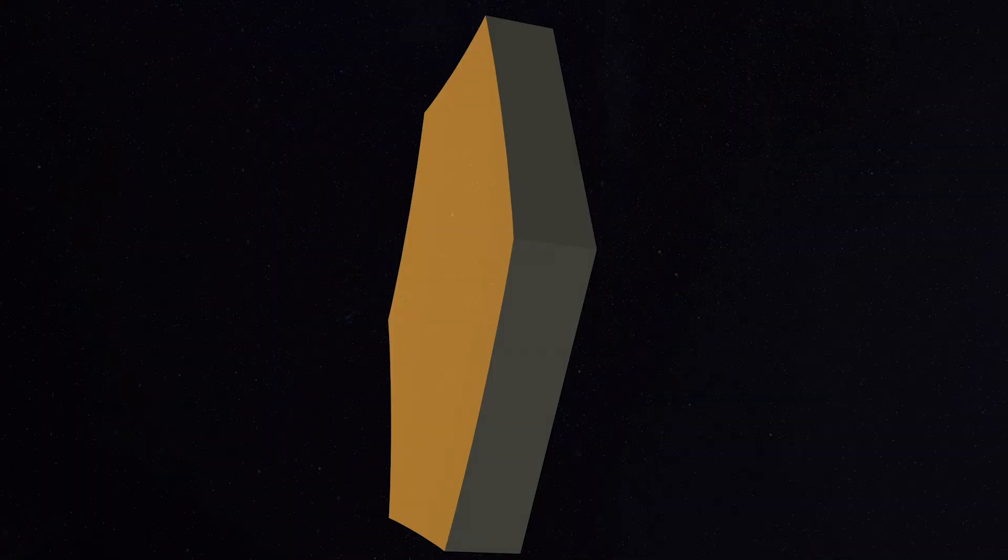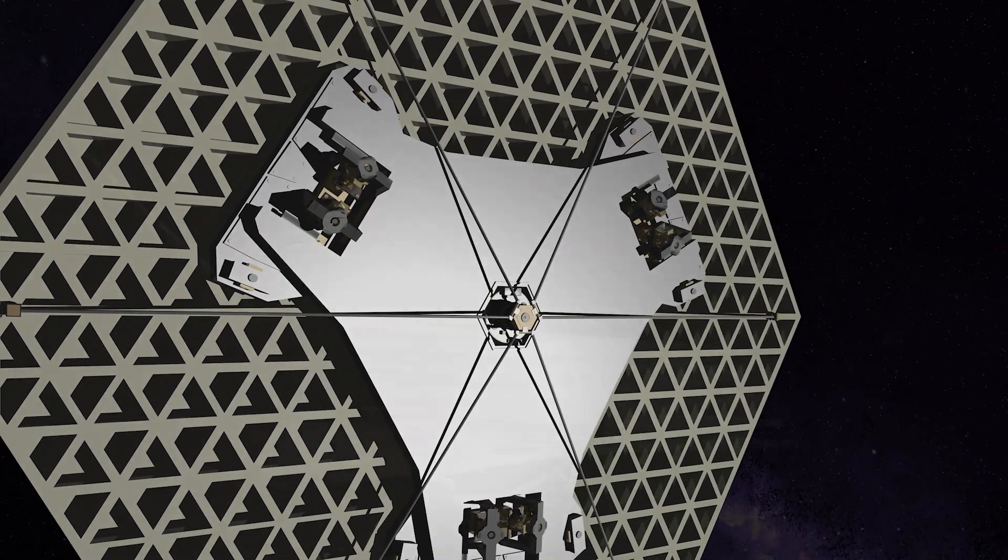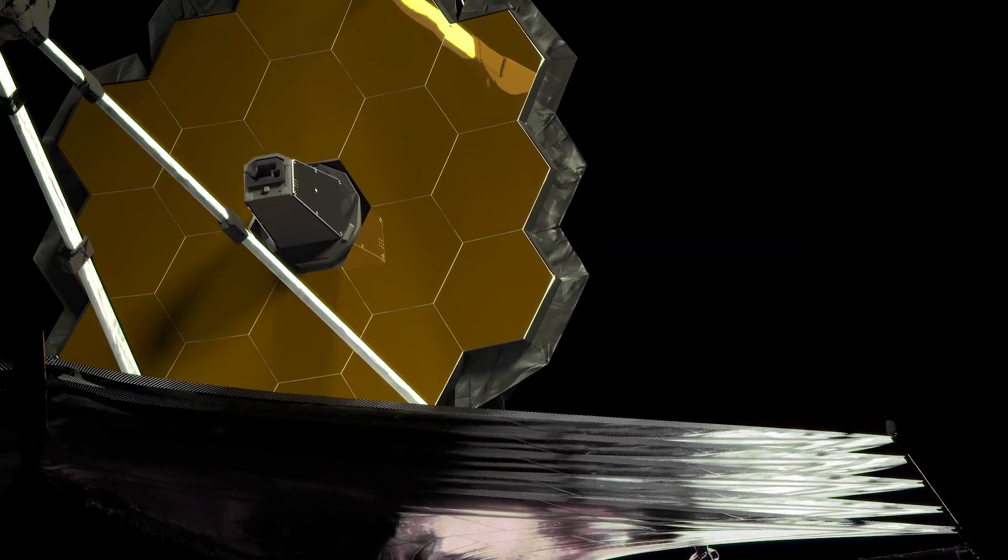After this delicate dance, Webb's golden mirrors are precisely aligned using motors behind each hexagonal mirror segment. Adjusting them to form one perfect mirror.